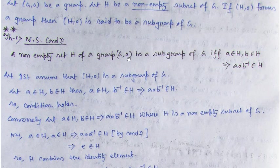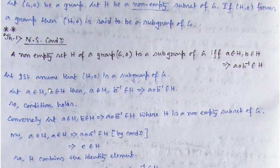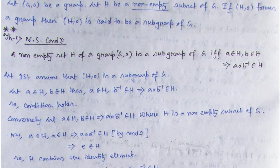This is an if and only if condition. If any subset is a subgroup, it will satisfy this condition: A∈H, B∈H implies A∘B⁻¹∈H. And if any non-empty subset satisfies this condition, then that subset will form a subgroup. For the forward direction: if H is a subgroup of G, then H itself is a group, so closure property holds, inverse exists, identity exists, and associativity is satisfied. If A∈H and B∈H, then since H is a subgroup (a group), B⁻¹ also belongs to H. By closure, A∘B⁻¹ belongs to H. So the condition is automatically satisfied.